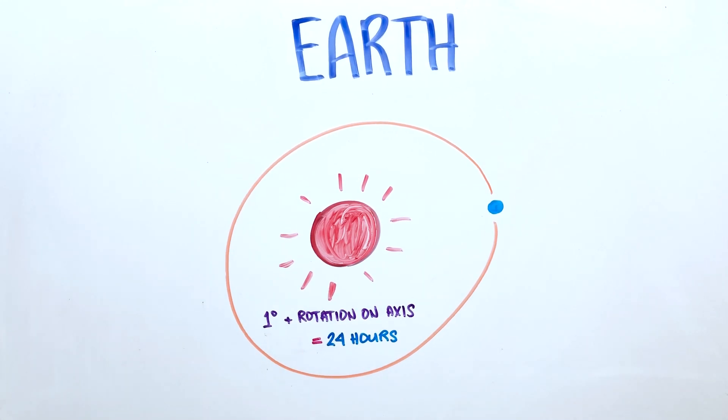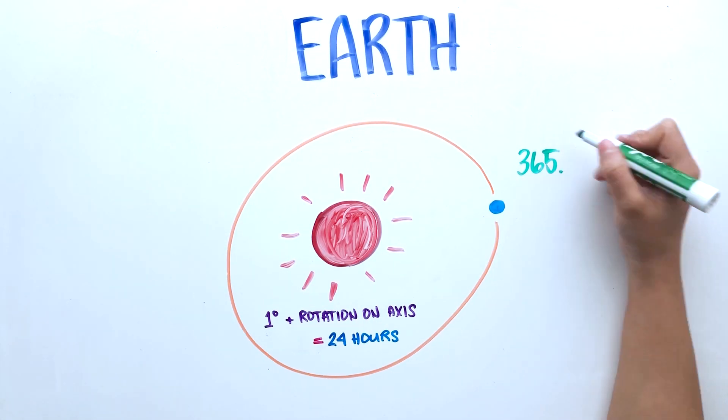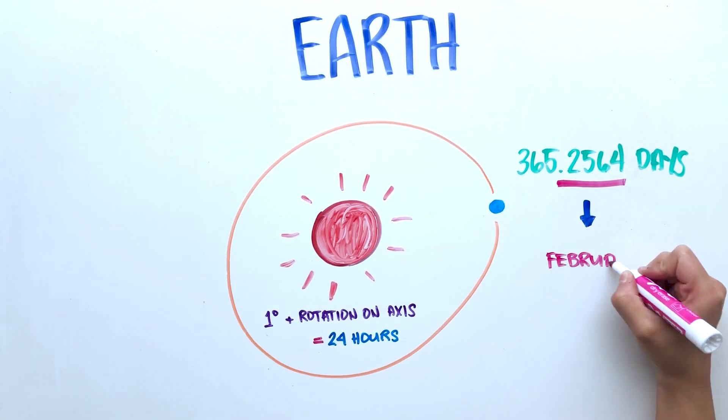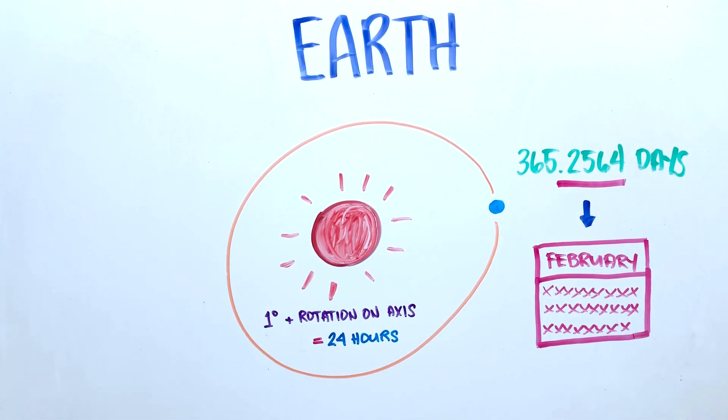A year on Earth lasts 365.2564 days. The extra 0.2564 is the reason why we have a leap year on February every four years.